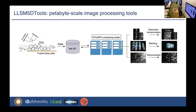To resolve this data problem, we have developed a set of software tools to enable petabyte-scale image processing. This software is capable of using all the CPU and GPU hardware resources from computing clusters. We have implemented the most commonly used processing tools, such as geometric transformation, stitching, and deconvolution for large microscope data, and these steps are all scalable and efficient.